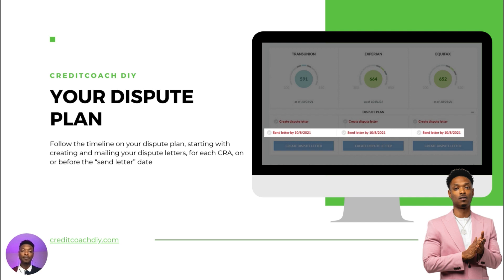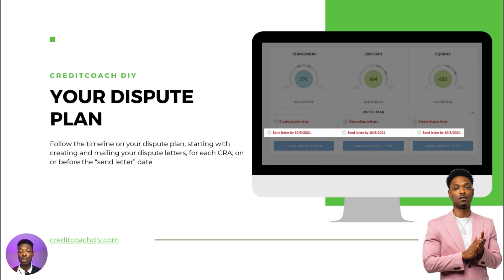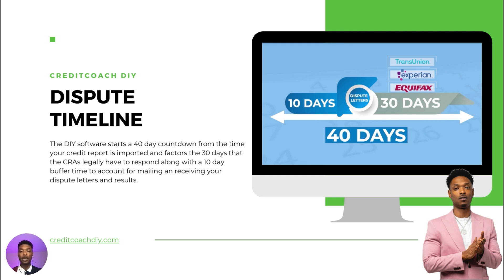On the actual dashboard, you have what's called your dispute plan. You want to follow the particular timeline they have, starting with creating and mailing your dispute letters for each of the credit bureaus by what's called the send letter date. Above the send letter date that's highlighted, it says 'create dispute letter,' which means you haven't created a dispute letter yet and you need to send that letter by the highlighted date. You can also see all your three bureau credit report scores and when that credit report was imported.